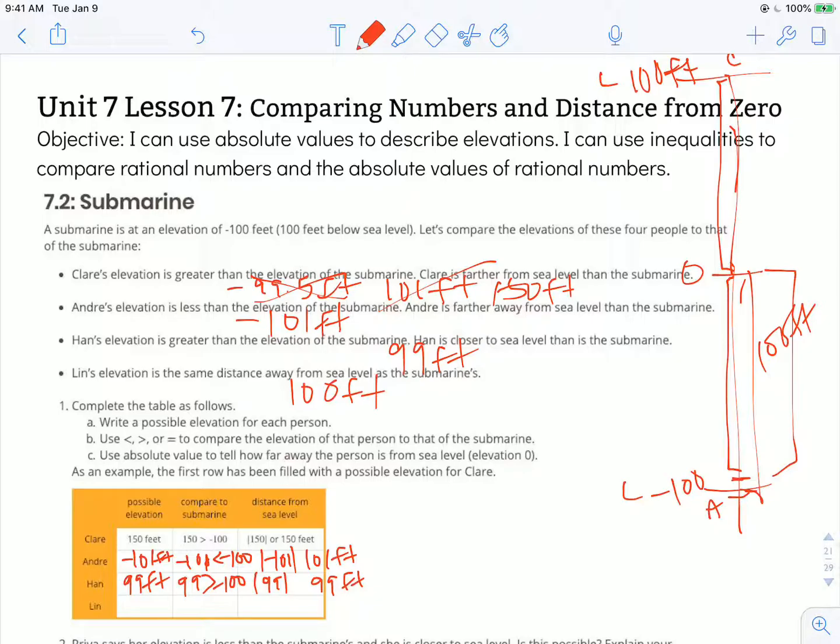Lynn, we decided, was at positive 100 feet. 100 is greater than negative 100, and the absolute value of 100 is 100 feet.